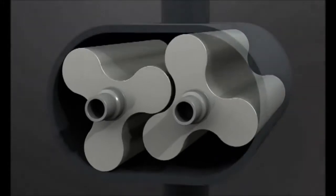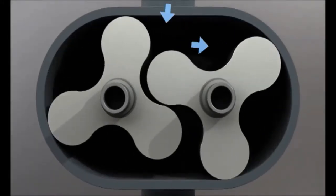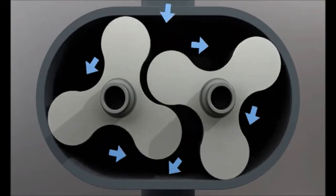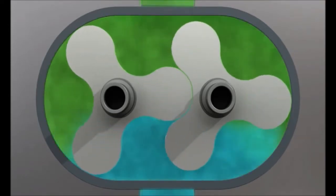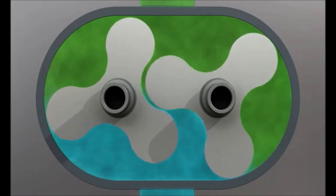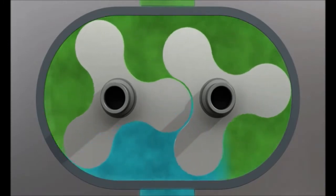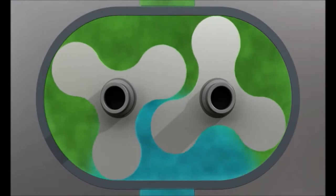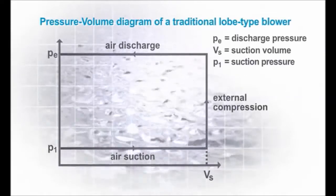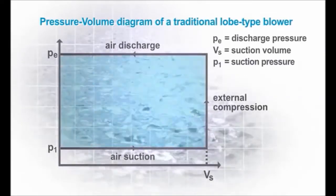In a traditional roots type lobe blower, rotors turn inside a casing. As the rotors turn, air is trapped and moved around from inlet to outlet without being compressed. The air volume remains constant. Air is finally pushed out against the backward air flow in the connected pipe work, hence we call it external compression. This pressure-volume diagram shows the energy needed for compression on a typical roots type blower.